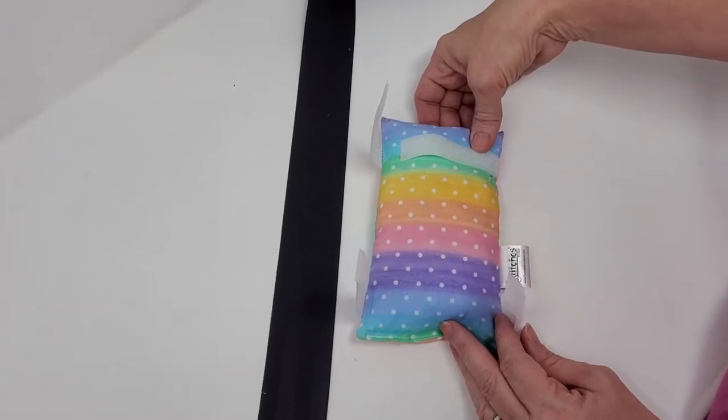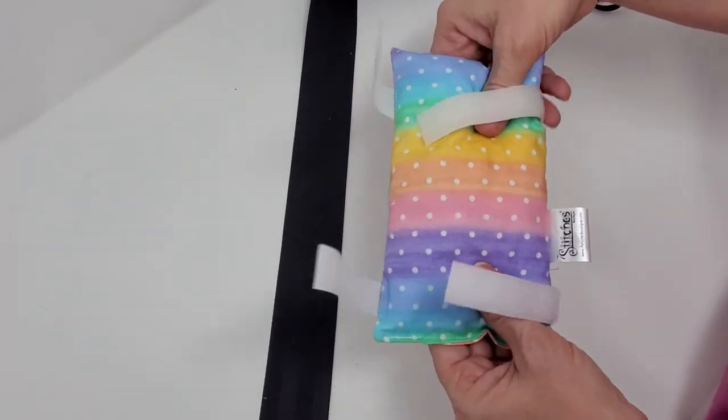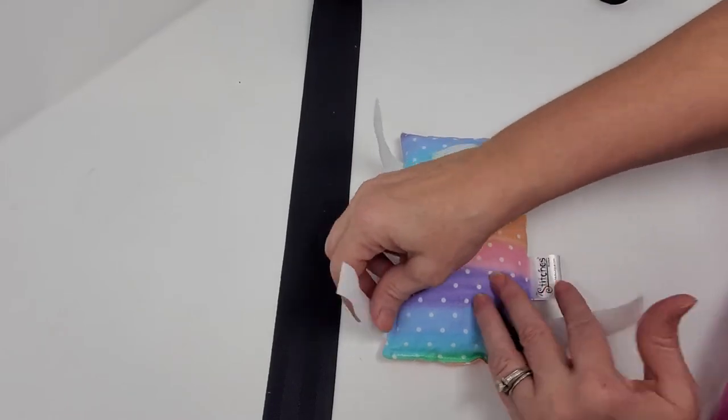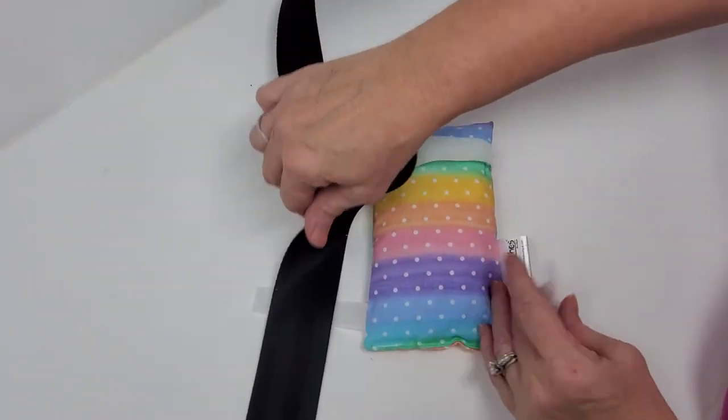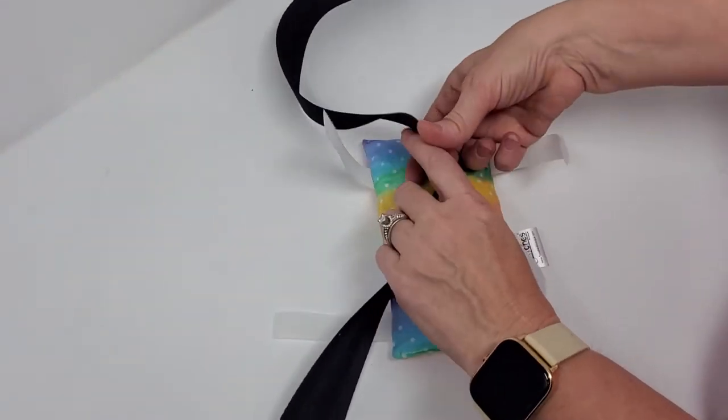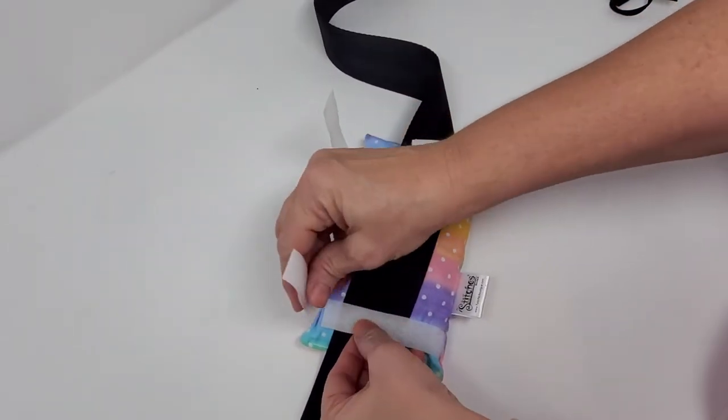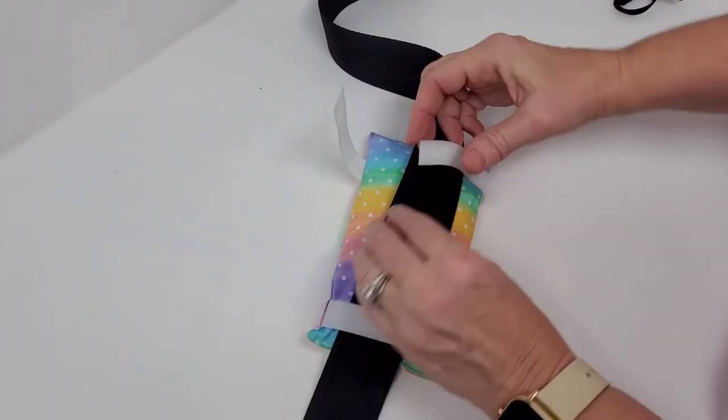I'm going to show a standard and an alternate way to attach these simple little basic port pillows to the seatbelt. So your standard way is just open up your Velcro, put your seatbelt in there, close your Velcro down around it.